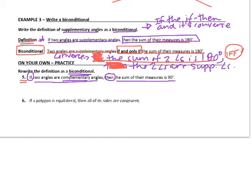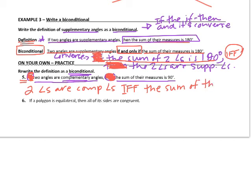Since the original statement and the converse are both true, we can write the biconditional. We do not need the word if or the word then: two angles are complementary angles if and only if the sum of their measures is 90 degrees. Make sure you have the if and only if, and get rid of the actual word if and the actual word then.